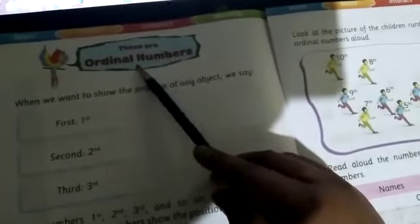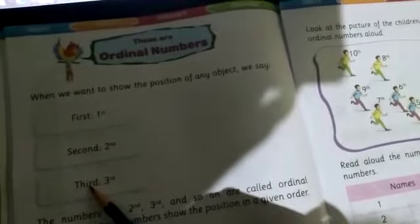Today we will start this chapter named, these are ordinal numbers. When we want to show the position of any object, we say 1st, 2nd, 3rd, in this way, 4th, 5th, 6th, 7th.